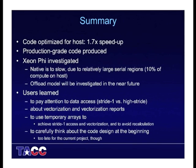Summary: The code optimized for the host gave us a 1.7x speedup. We created production-grade code right from the beginning so we don't have to redo everything in the production setup. We investigated the Xeon Phi — not surprisingly, native mode was too slow and we have to go to offload. We learned some valuable lessons: pay attention to data access, think about and understand vectorization and look at vectorization reports, don't be afraid to use temporary arrays to facilitate stride-one access, avoid recalculation of temporary data, and carefully think about code design at the beginning. That's all I have. Thank you.